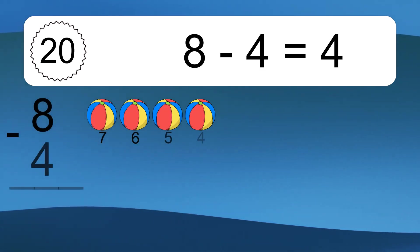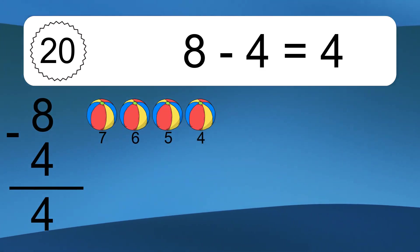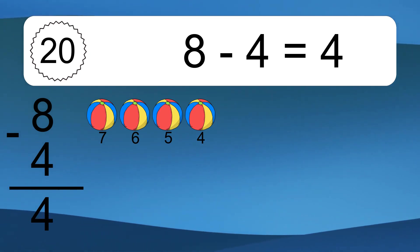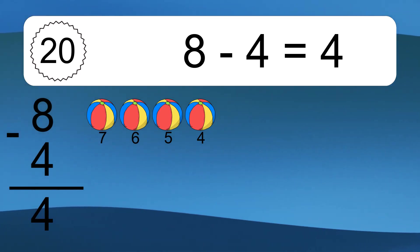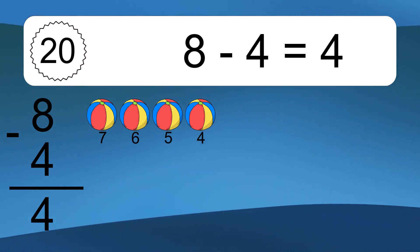8 minus 4 equals 4. Let's count it: 7, 6, 5, 4.